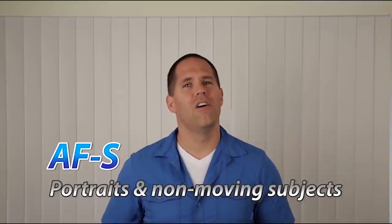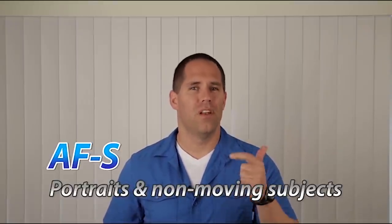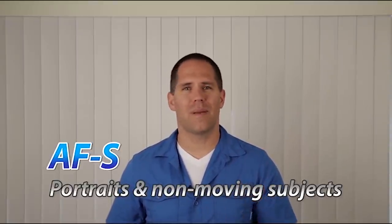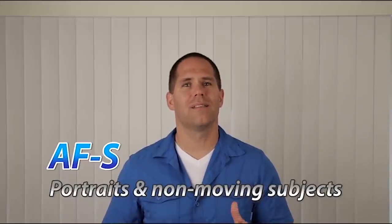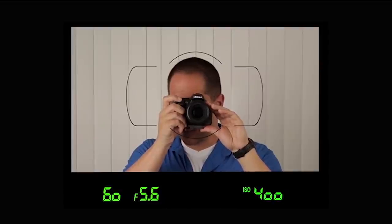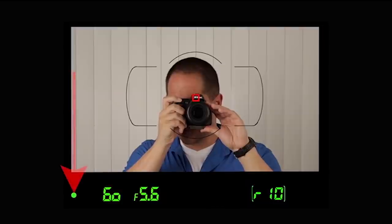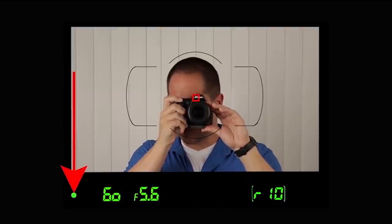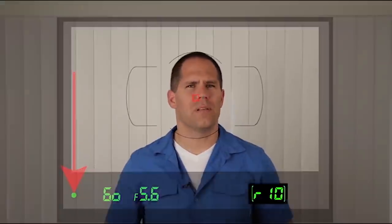This is ideal for shooting portraits, non-moving subjects like landscapes, anything that is not moving. Now the focus indicator you should be aware of is in your viewfinder. It's going to be in the bottom left hand corner of your screen. So when you take your finger and push the shutter button halfway down, if you get a focus lock you should notice this green circle lighting up just off to the left of the shutter speed. That means the camera thinks the subject is in focus.